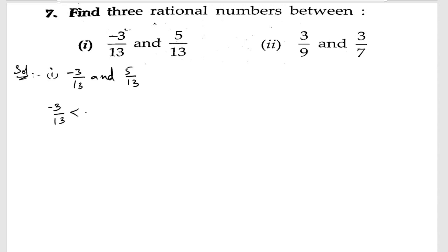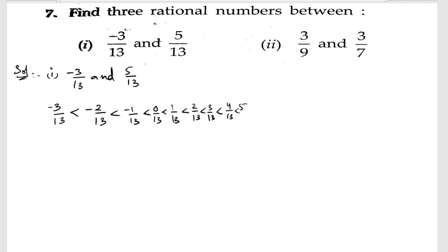...the numbers between -3 and 5 are: -2/13, -1/13, 0/13, 1/13, 2/13, 3/13, 4/13, and 5/13. So we can select any three rational numbers between them.